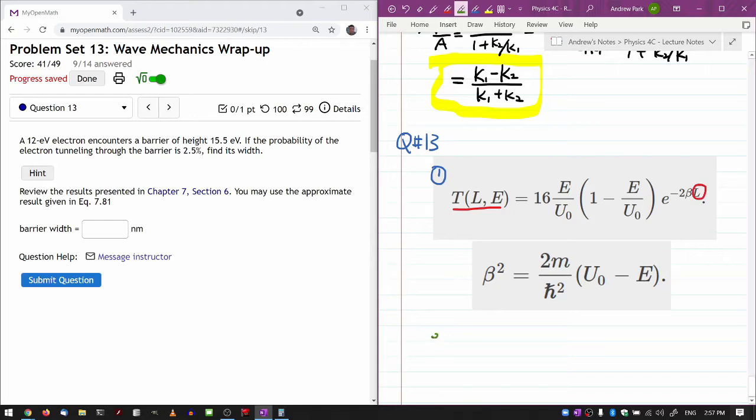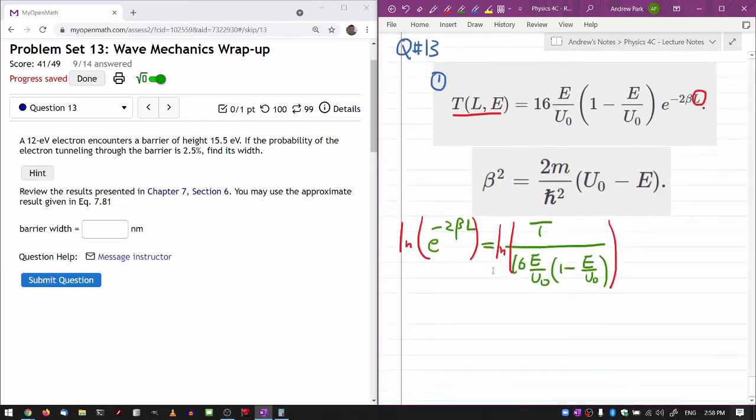So let me just put everything together. E to the minus 2 beta L is equal to T divided by 16 E over U-naught, 1 minus E over U-naught. Now I can take the natural log of both sides. Doing that gets me minus 2 beta L on the left hand side.